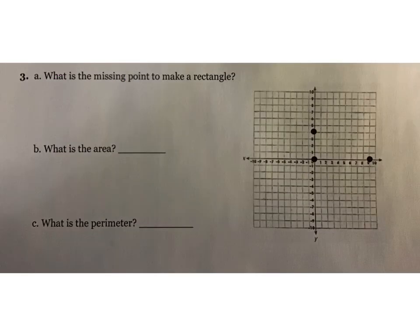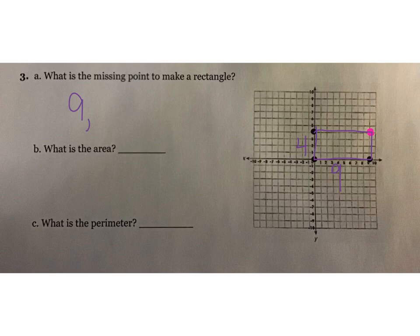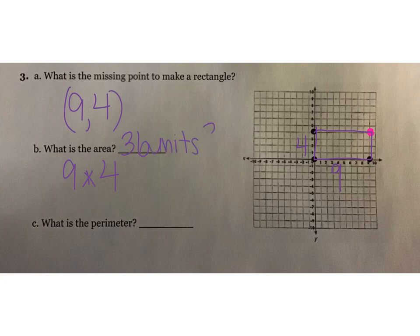Go ahead and find the missing point for this one, find your area and perimeter, then come back and check it. The missing point is right here — make it into a rectangle. The length and width are 4 by 9. The missing point was (9, 4) because it's in quadrant 1. Then 9 times 4 gives your area of 36 units squared. Perimeter: 9 plus 9 plus 4 plus 4 gives me 18 plus 8, which is 26 units.